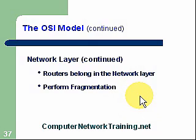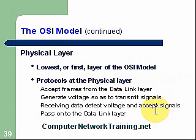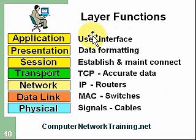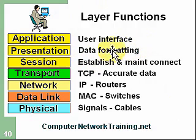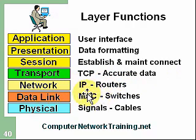The data link layer is where we add our MAC address. There's actually a sublayer here: the logical link control and the MAC. The physical layer is where we break it down into our bits or voltage levels, and then we put it on the cable. To summarize layer functions: the application layer is our user interface; presentation is where data is formatted or encrypted; session is where we establish and maintain our connection; transport is our TCP, maintaining accurate data transmission; the network layer adds the IP address used by routers for routing; the data link layer adds the MAC address used by switches in a local area network; and the physical layer handles the signals using cables or media.